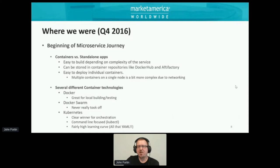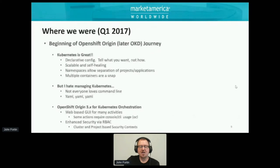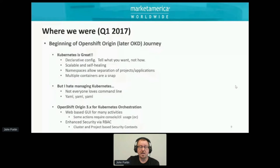We liked Kubernetes, but we wondered how we could move forward and make it a little bit more user-friendly. Kubernetes is great — declarative configuration, you tell it what you want and it just does it, namespaces — but not everybody loves the command line and all that YAML. So back in that time, we started to look at OpenShift Origin. OpenShift had done a big pivot from version two to version three and really went into the Docker containerization framework.